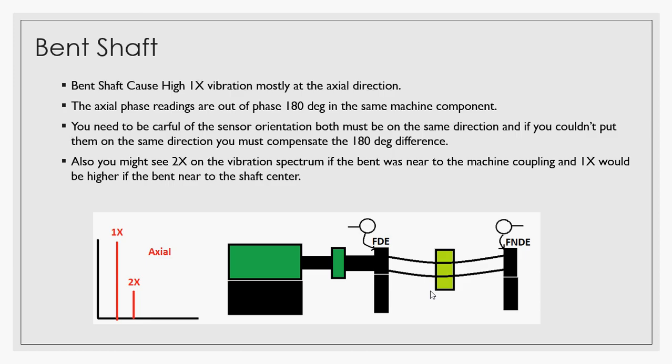What I mean by the same machine component, if you do this on the fan shaft or on the motor shaft, you need to be careful of the sensor orientation. Both must be on the same direction, and if you couldn't put them on the same direction, you must compensate the 180 degree difference.